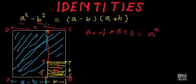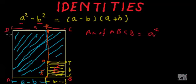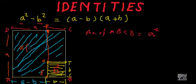Let me call this point as E and this point as F. So what is rectangle DAEF? DAEF is a rectangle whose width is A - b and length is A. So the area of rectangle DAEF will be A × (A - b).